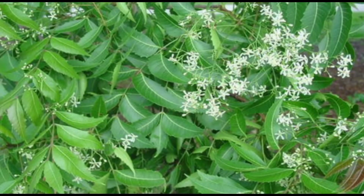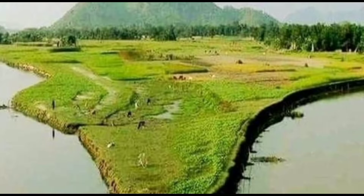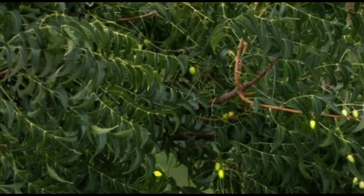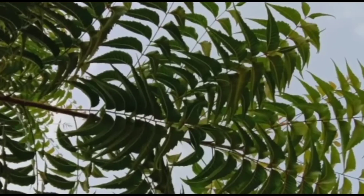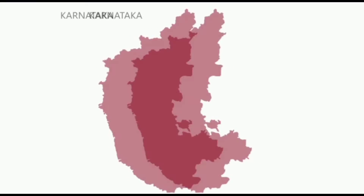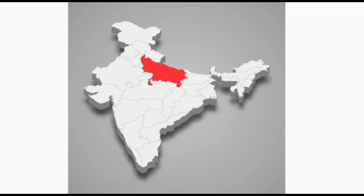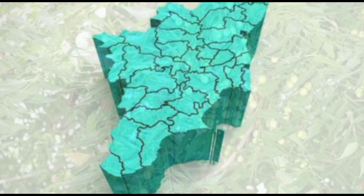There are an estimated 25 million trees grown all over India, of which 5.5% are found in Karnataka and it is in third place. Uttar Pradesh accounts for 55.7% and Tamil Nadu 17.8%, occupying the first two places respectively.